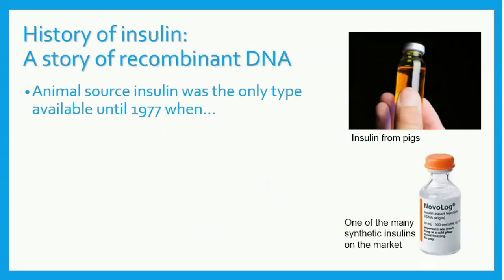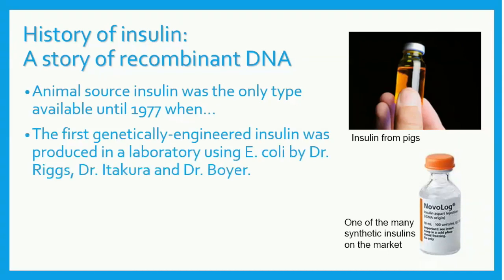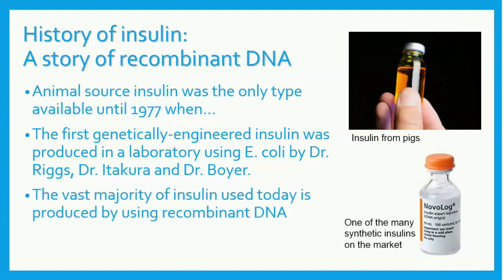Recombinant DNA has been important in the medical field. An example of this is insulin. Before 1977, the only source of insulin was through animals that we found to be compatible with humans. This was an expensive and risky undertaking, since people could have allergic reactions to animal-based insulin. In 1977, Dr. Riggs, Dr. Itacora, and Dr. Boyer produced human insulin that was reproduced by E. coli plasmids. Today, the vast majority of insulin is produced by using recombinant DNA.